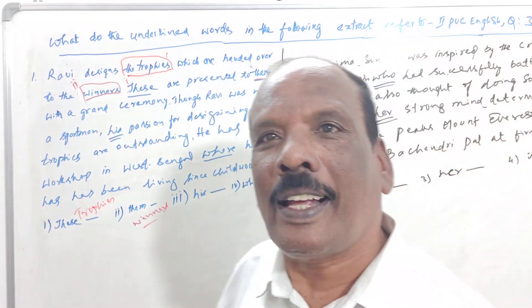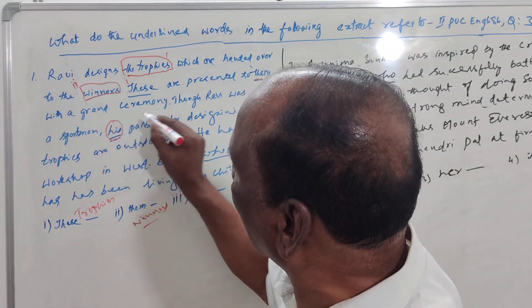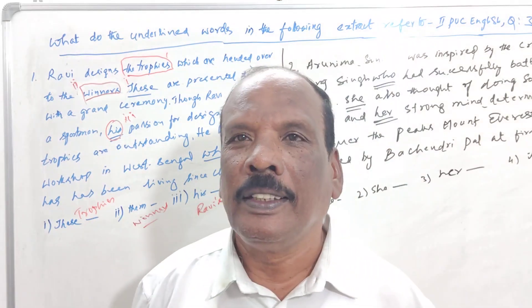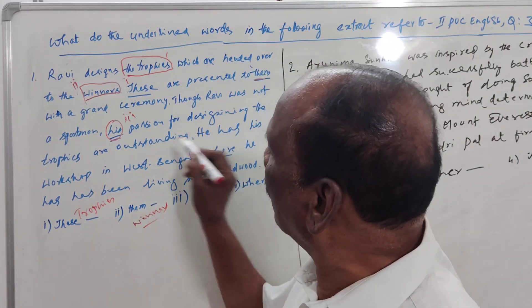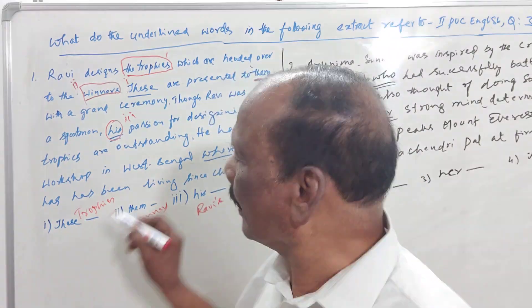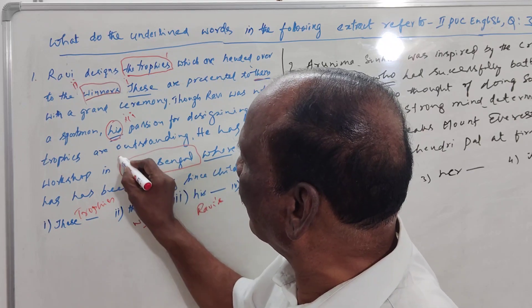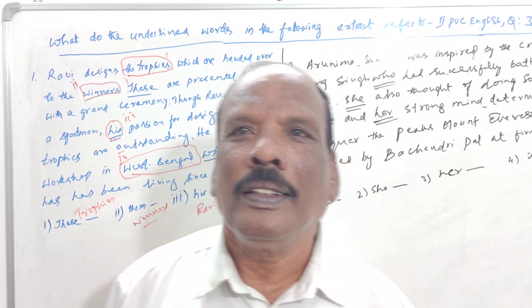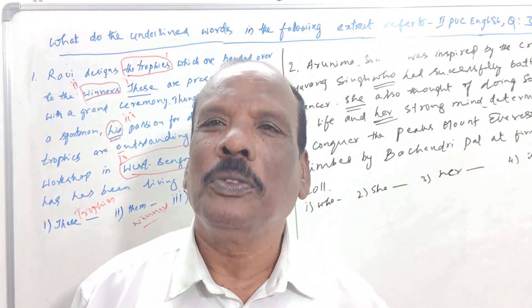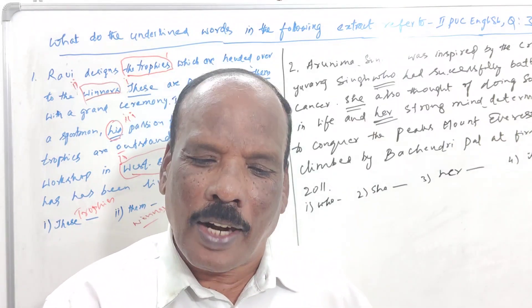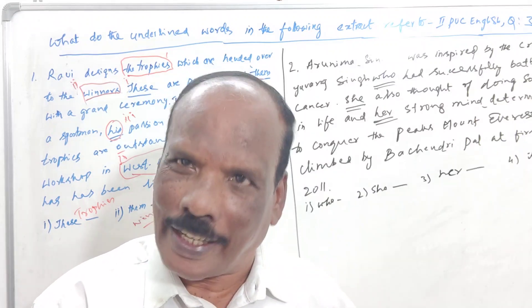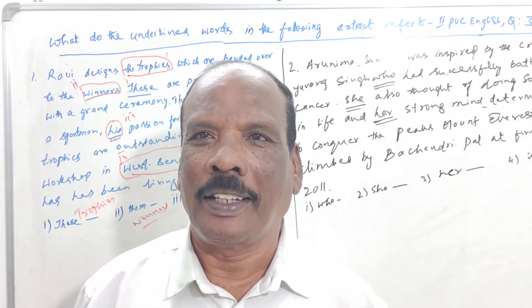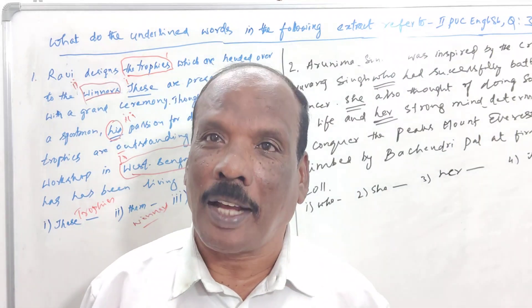Coming to 'his passion' — that is Ravi's. 'His' refers to Ravi. And 'where' — he has his workshop. You should find the answer in the extract itself. You should understand the extract or passage properly.